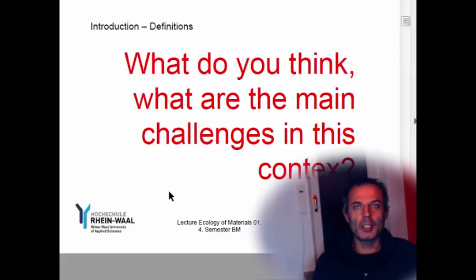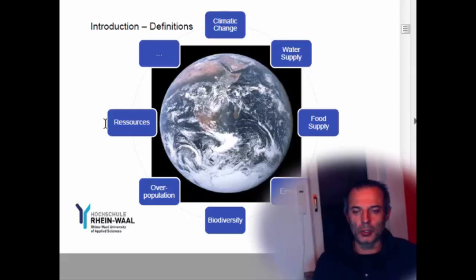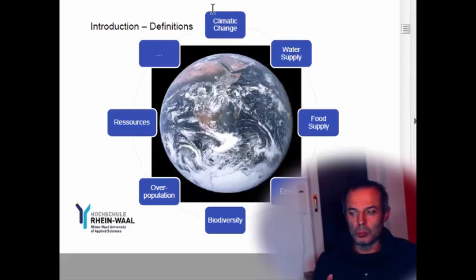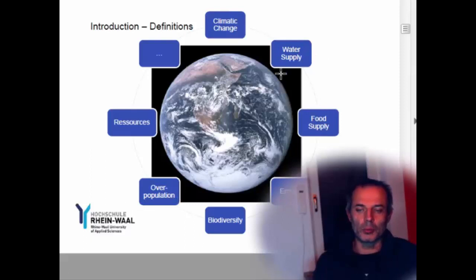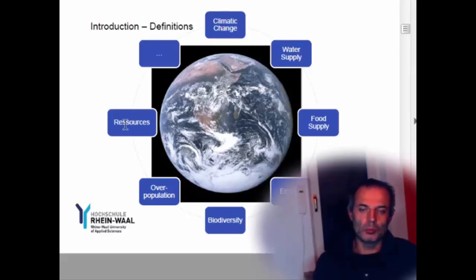What do we think of the main challenges? So this picture shows all the things that we could have. Overpopulation is obviously a major problem. Climate change is a problem — probably a sub-problem of overpopulation. Food supply and water supply equally. Erosion is caused by bad management. Biodiversity is again a sub-problem, mostly caused by too many people.